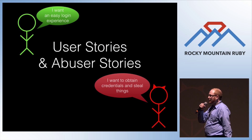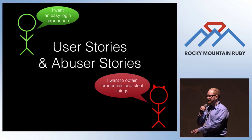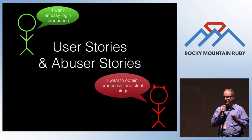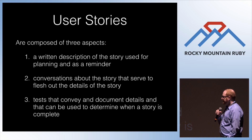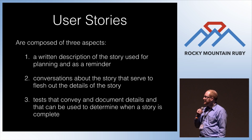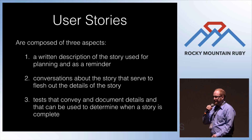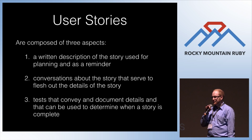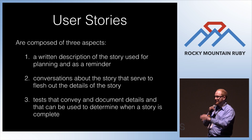Since security is a requirement and we want to include it in the development process, one tool we have as developers is user stories with security constraints and abuser stories — user stories from the point of view of a malicious adversary. The Mike Cohn definition of a user story is a written description of functionality, with conversations about the story that flesh out the detail, and then card, conversation, and confirmation. When writing in Pivotal Tracker, we can use the notes section to talk about security concerns.